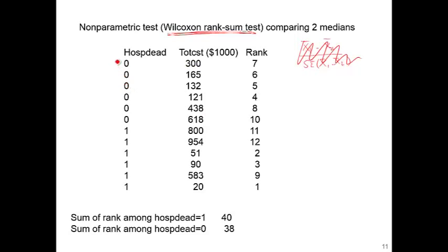You have six patients who survived in hospital, and you have another six patients who died in hospital. And you have a total hospital cost, unit is $1,000. So this is $300,000.